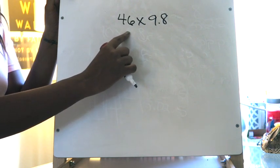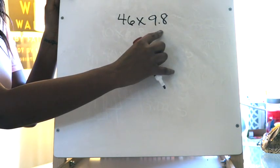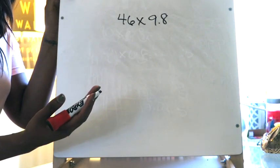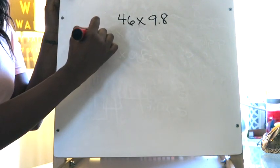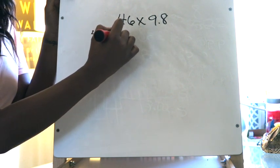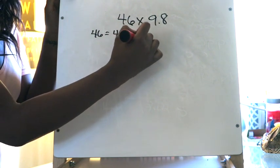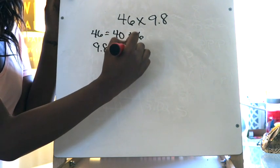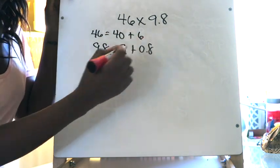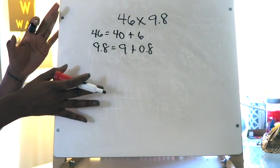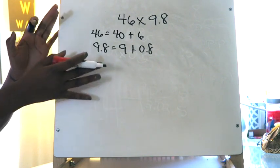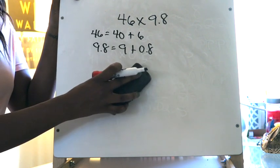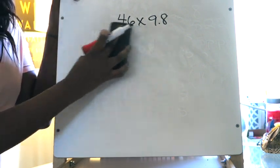In this case the two factors are 46 and 9 and 8 tenths, and you want to break those down into their place value positions. So 46 would be written as 40 plus 6, and 9 and 8 tenths would be written as 9 plus 8 tenths. That's going to dictate how you set up the diagram, so just keep those four digits in mind.